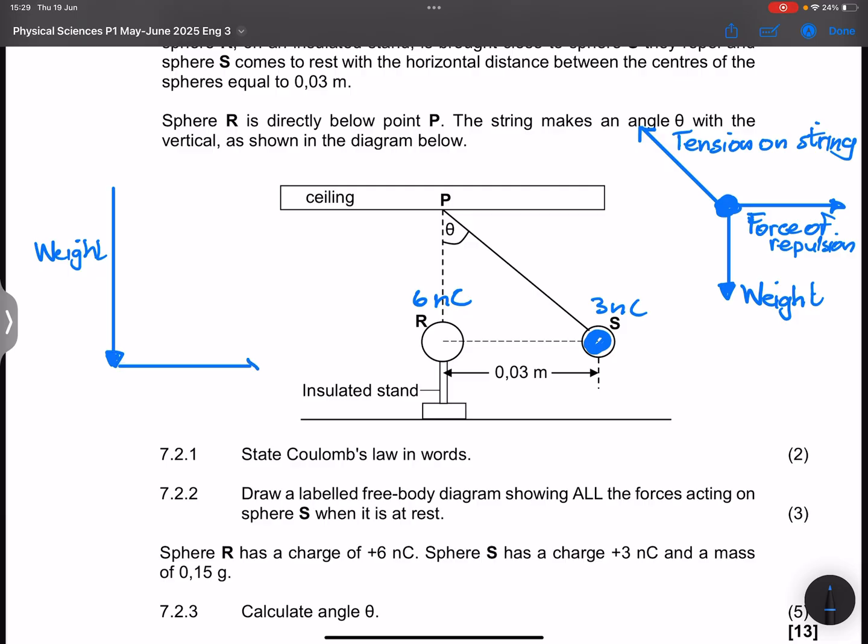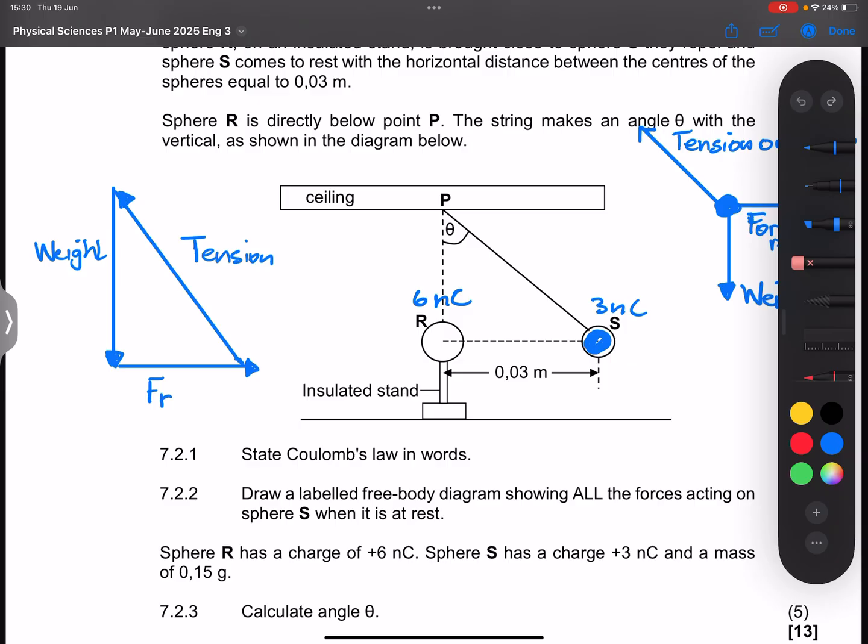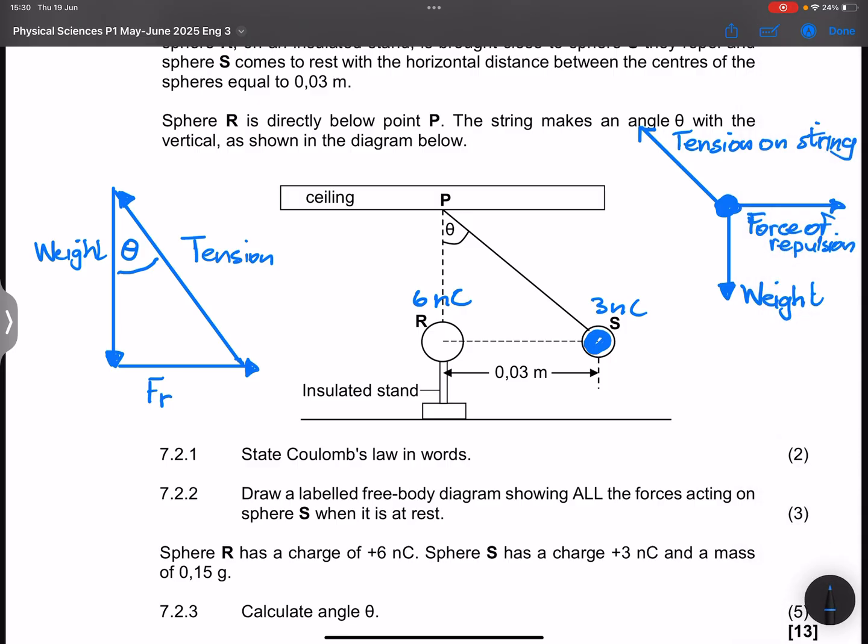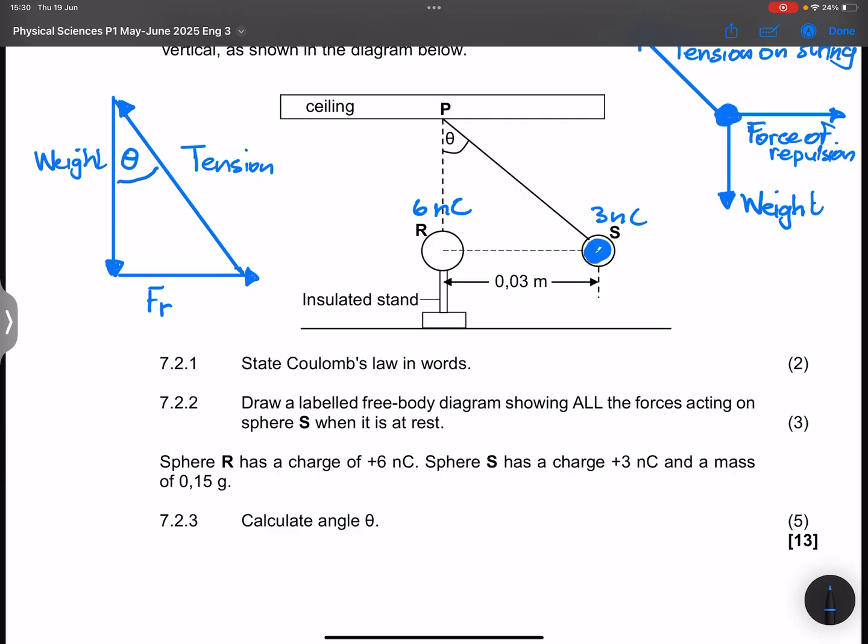We've got the force of repulsion, let's call it FR, and we also have the tension on the string. Do you notice ladies and gents those forces are actually at equilibrium with one another? As a result they will then form a head to tail diagram. So this would be the tension on the string. Now remember that theta is the angle between the vertical as well as that tension, so theta would be this angle over there. Now question is, am I able to determine any of the two forces? Absolutely we are able to. We can get the force of repulsion.